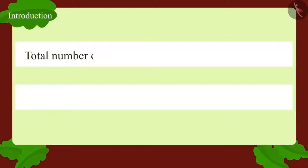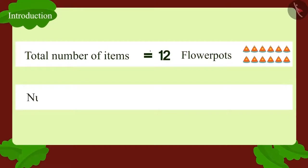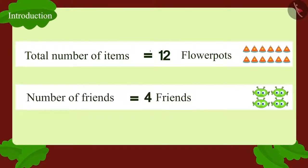What is the total number of objects here? 12 flower pots. Among how many people are they to be divided? 4 friends. Come, let us find out how many flower pots will each friend get.